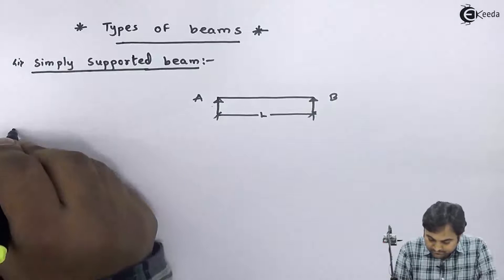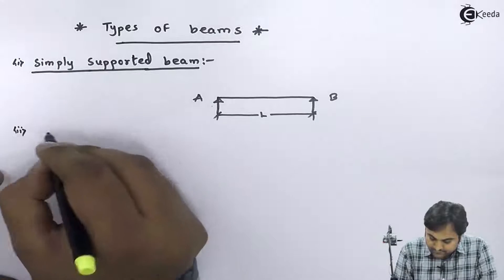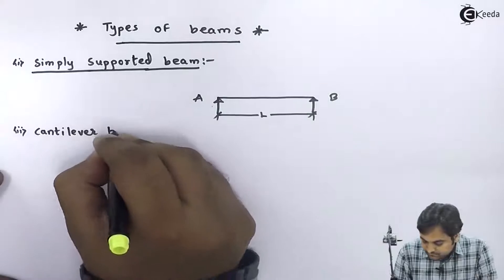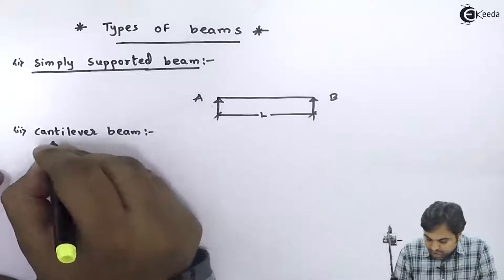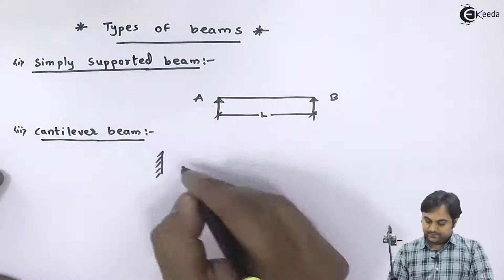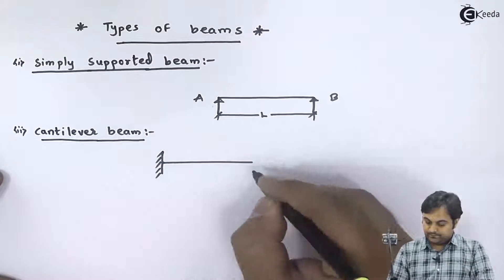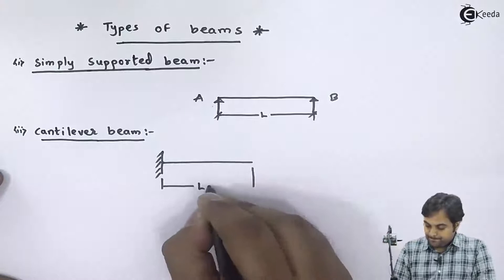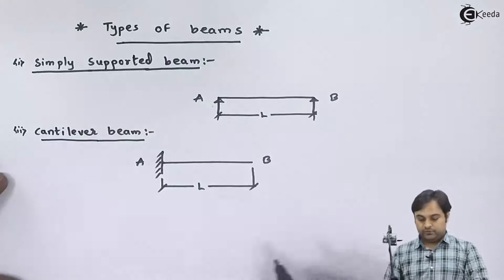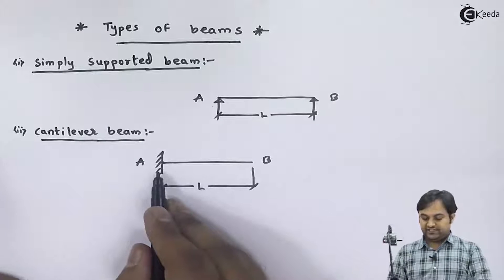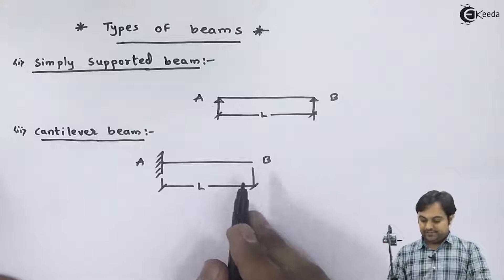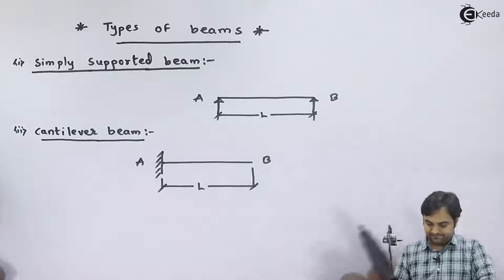Next is the cantilever beam. If we have a beam which is fixed at one end and free at the other end, that beam is called a cantilever beam.